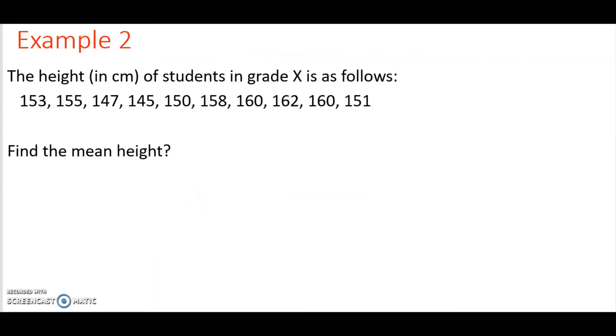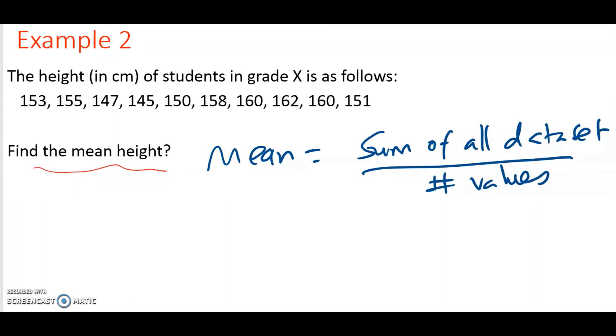Say we have the height of students in grade X as follows: 153, 155, 147, 145, 150, 158, 160, 162, 160, 151. So find the mean height of this. What I have to do is the mean equals the sum of all the data set and then divide by the total number of values in that data set.